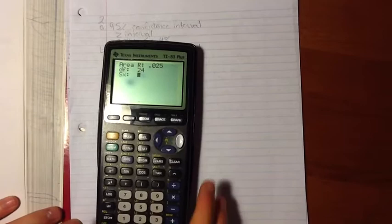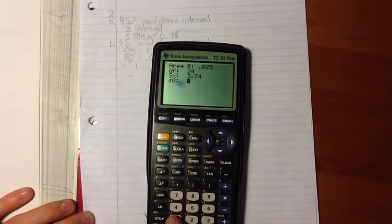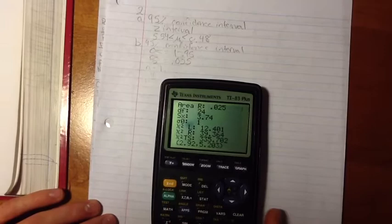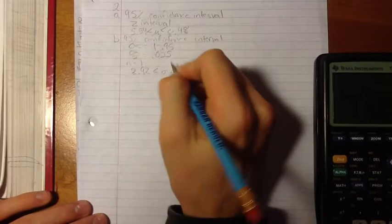Then for the sample standard deviation, we put in 3.74, which was given to us in the problem. Press enter, and we put in 1, and then we press enter. The answer we get is 2.92, 5.203. So our answer is 2.92 is less than standard deviation, which is less than 5.20.